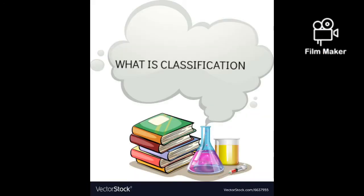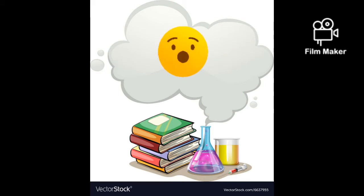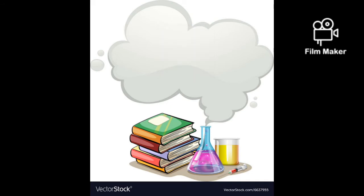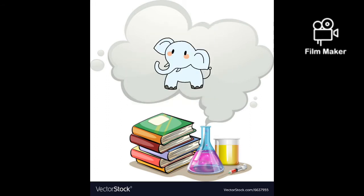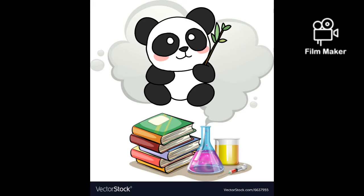Friends, do you know what is classification? Classification — the arrangement of animals and plants in taxonomy groups according to their observable similarities is known as classification. In short terms, we can also say that the separation of plants or animals into their respective groups is known as classification.